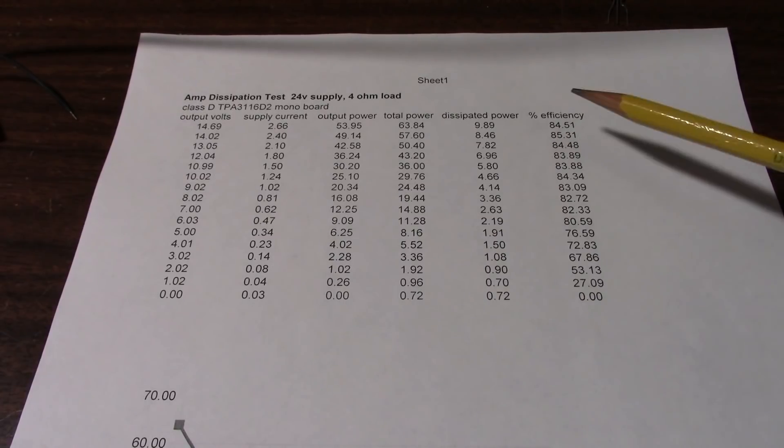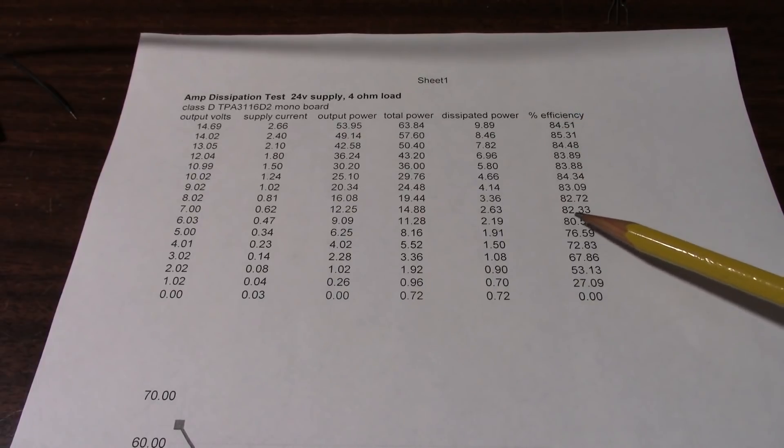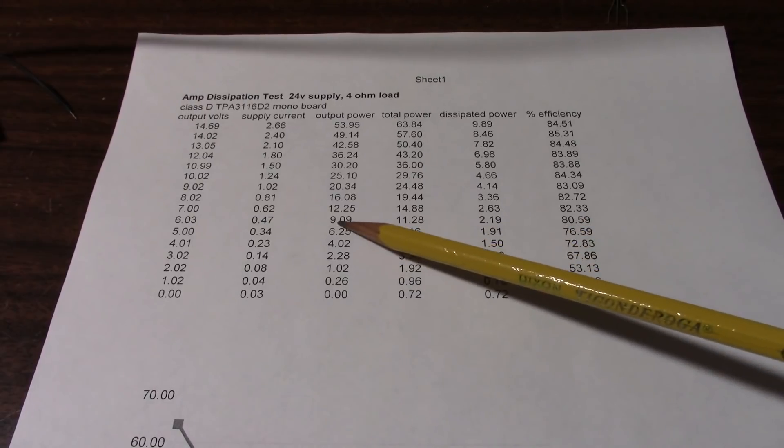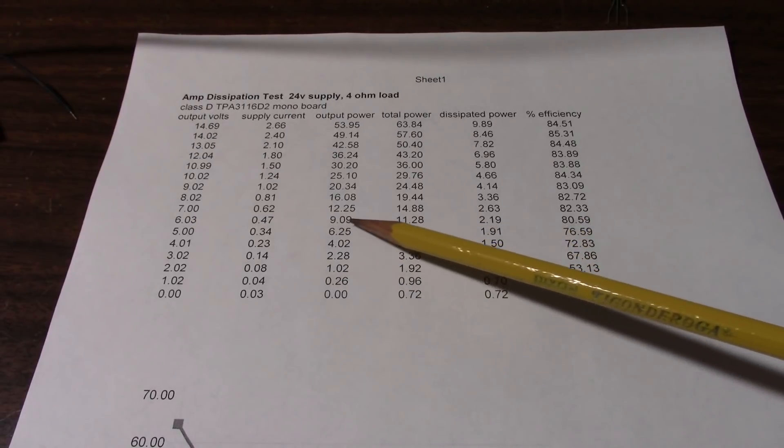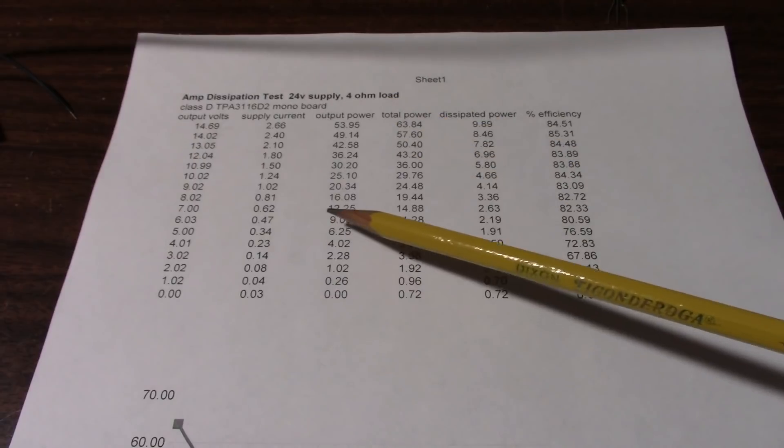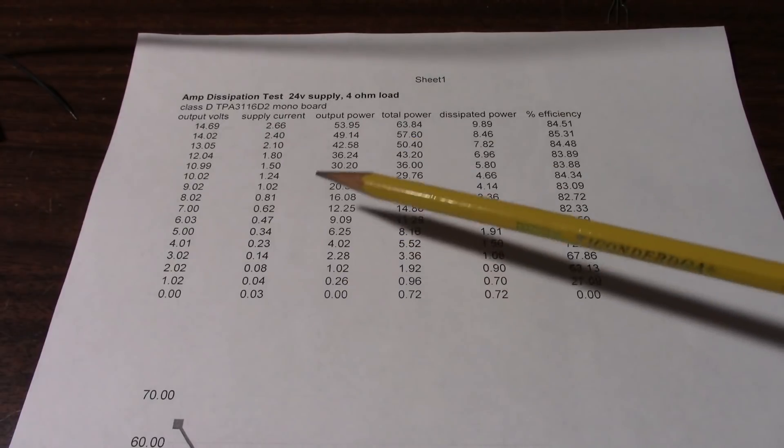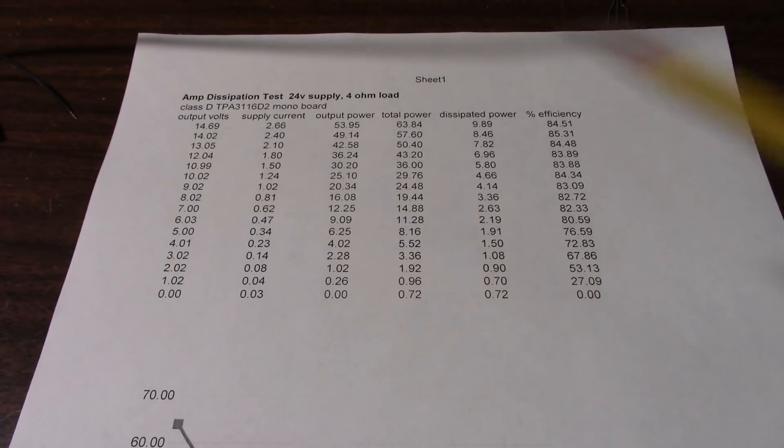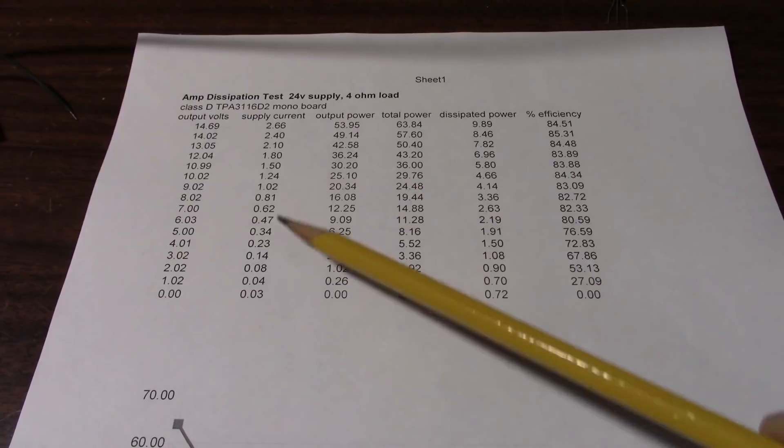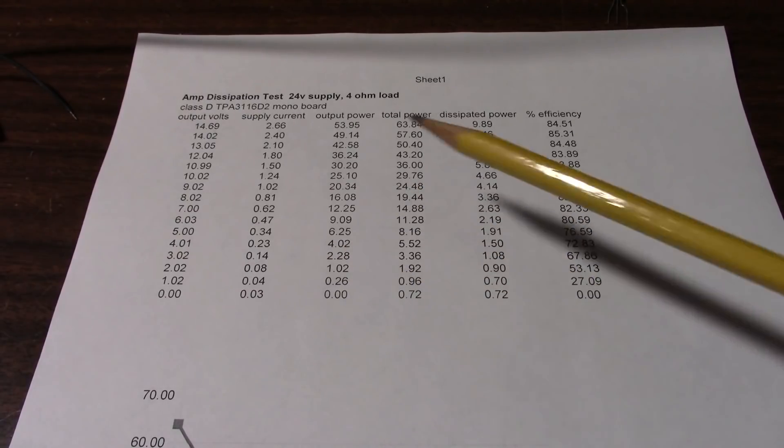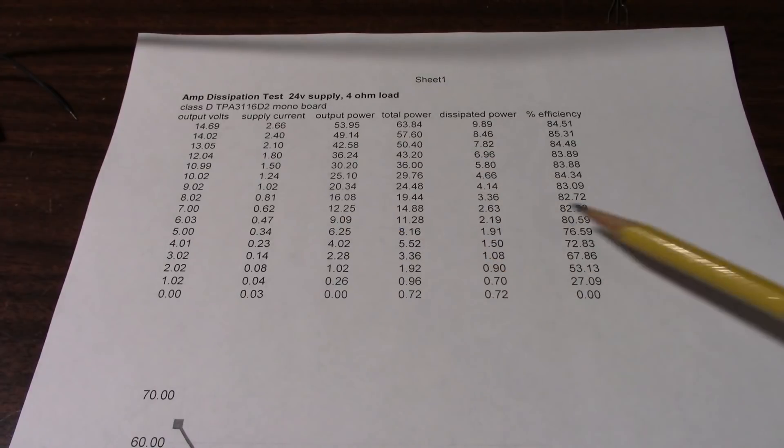Another interesting thing with the efficiency is if we go down here where we're still above 80%, output power is now, you know, less than one-fifth. Yet the efficiency is still pretty high. So that's where you do really well with these Class D amps. At lower powers, the Class AB amp, the efficiency really drops. But with the Class D, it stays much higher.